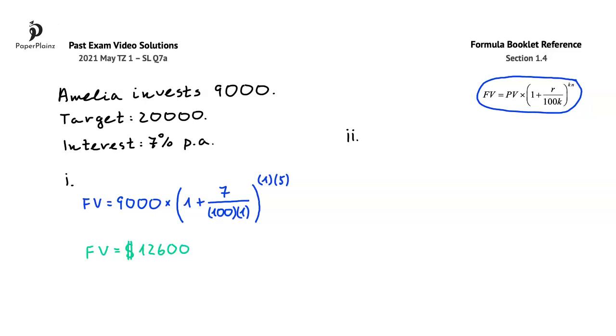The future value here is $20,000. This is equal to 9,000 multiplied by 1 plus 7 over 100 times k, so 100 times 1, which is simply 100. And since k is 1, in the power we get 1 times n, so simply n. To find n, we can graph, use the numerical solver, or use logarithms. Here, I will use the numerical solver.